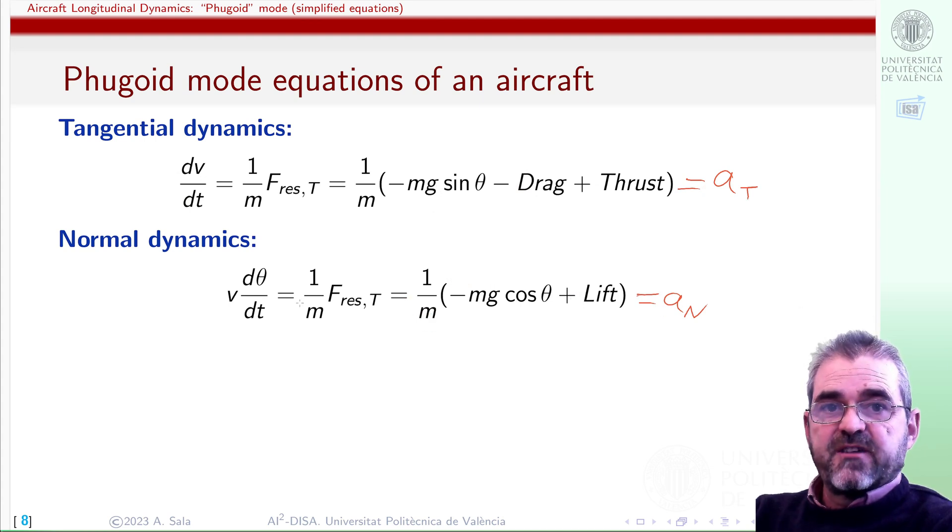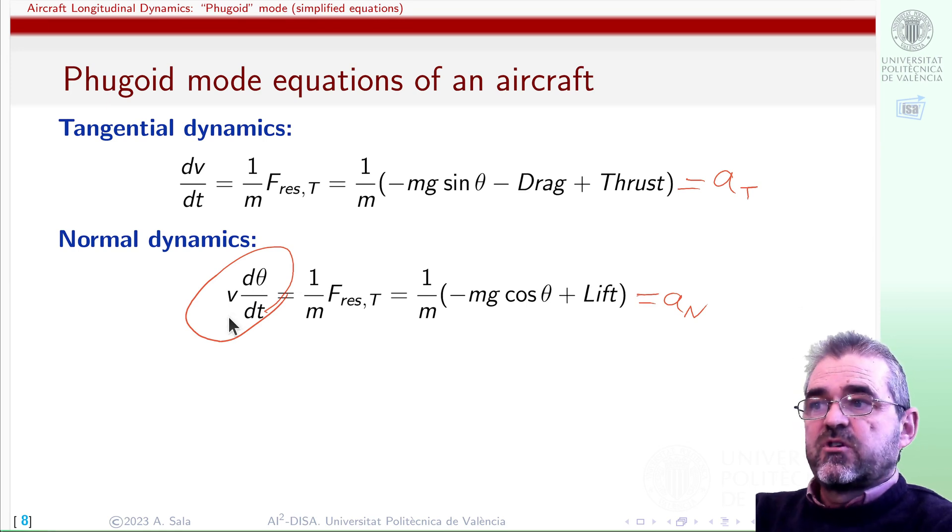And normal acceleration was this force balance divided by mass, and as the reference frame is not inertial, it moves with the aircraft's body, then acceleration was the product of linear speed times angular speed of the path the center of mass is following.